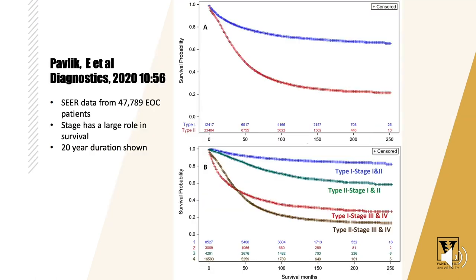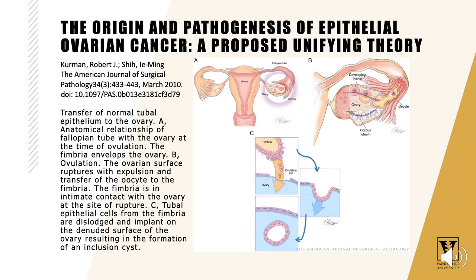We can see from this slide the statistics of survival — survival in type 2, shown in red, is much less than type 1, and also depends on the stage at which it is discovered. These are some beautiful diagrams from Kerman and their work, really changing the understanding of ovarian cancer. Again, type 2 arises from the fimbriated end of the tube, extending into the ovary through a rent, usually related to ovulation.